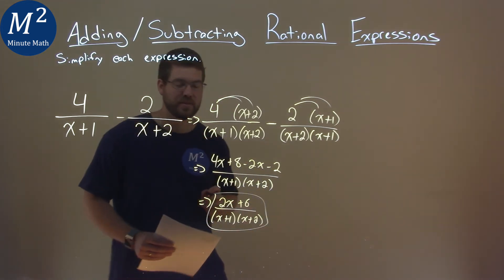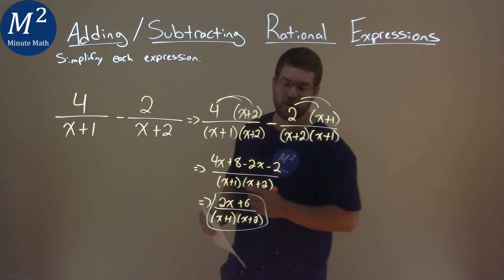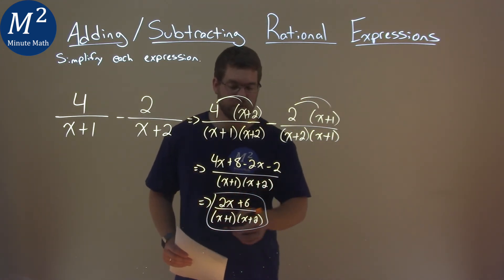And so our final answer here, that's pretty much it, can't simplify anymore, is 2x plus 6 over x plus 1 times x plus 2.